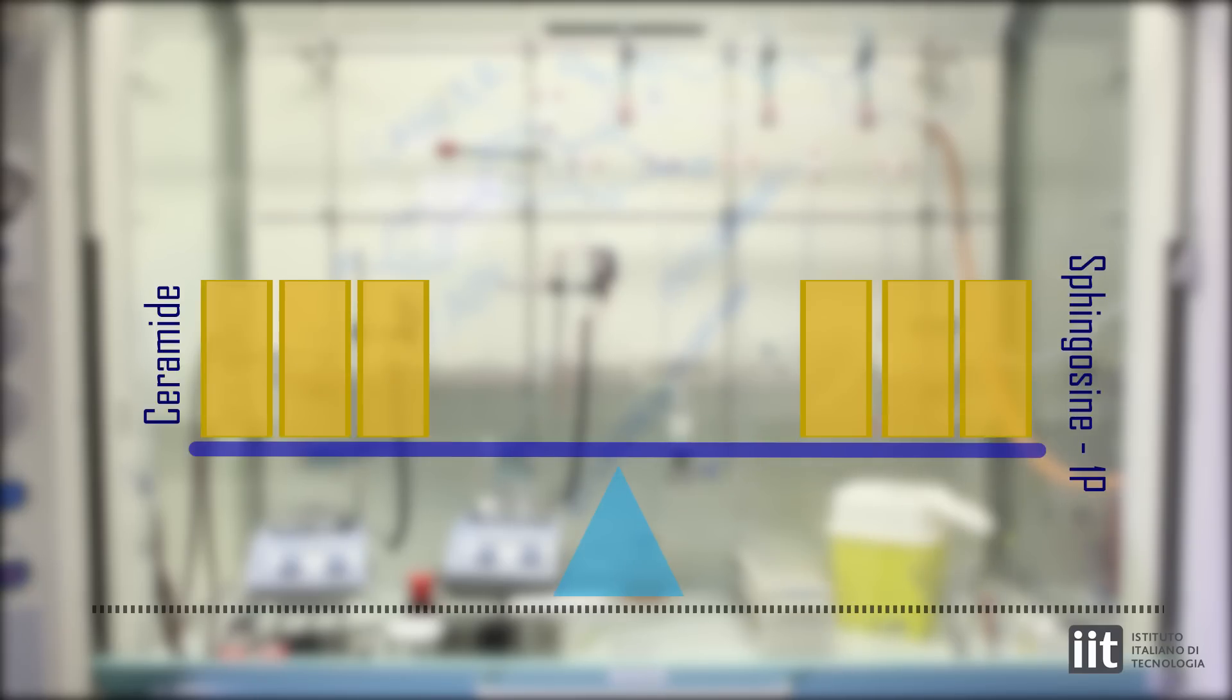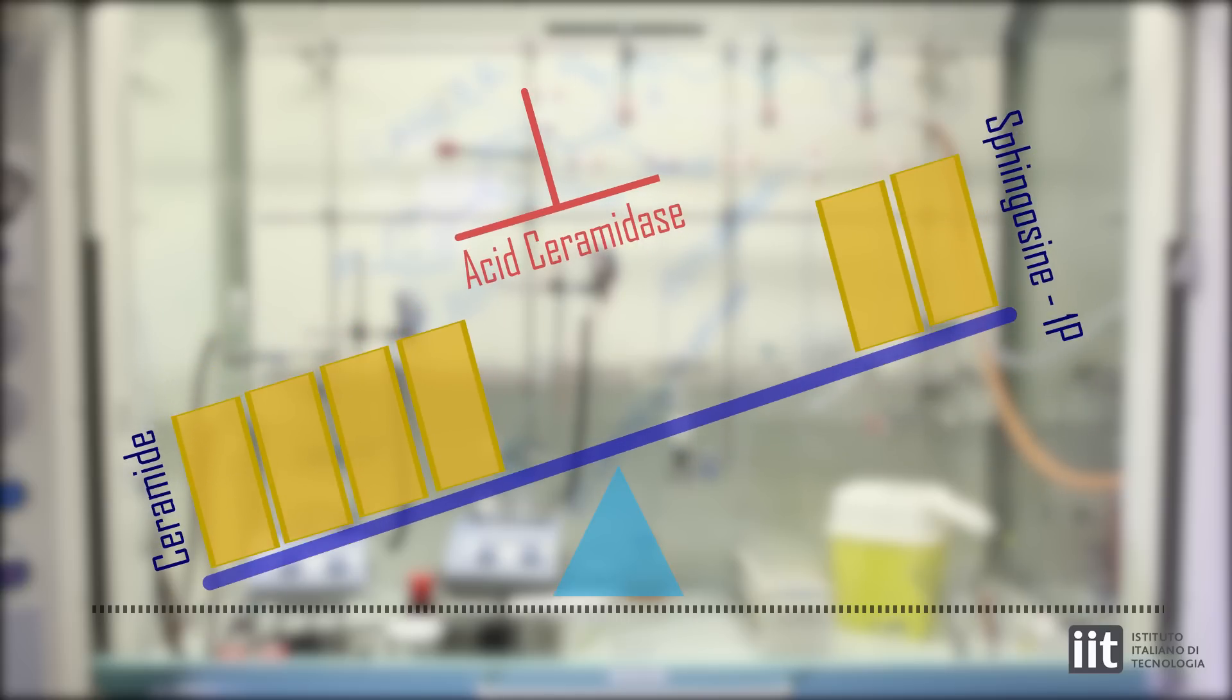Acyceramidase plays an important role in the complex network of sphingolipid metabolism. By blocking acyceramidase with small molecules, we can tilt the balance between ceramide and sphingosine 1-phosphate, favoring the anti-tumoral and anti-proliferative effects mediated by the accumulation of ceramides.